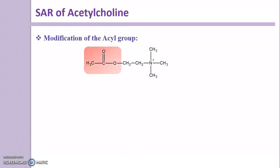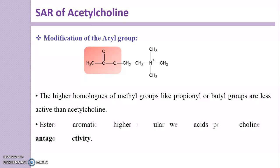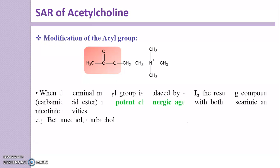Moving to modification of the acyl group. Higher homologs of the methyl group, such as propionyl or butyryl groups, are less active than acetylcholine. Esters of aromatic or higher molecular weight acids possess cholinergic antagonistic activity instead of agonistic activity. So replacing the methyl group with any aromatic group or higher molecular weight acid turns the compound from an agonist into an antagonist.